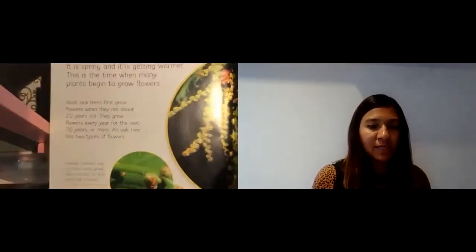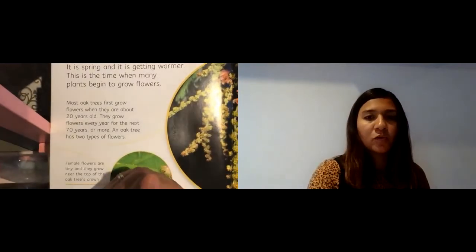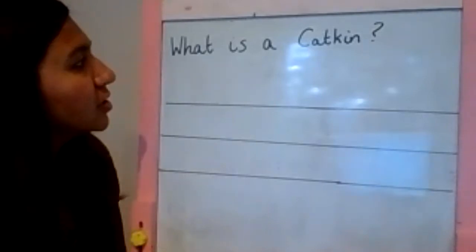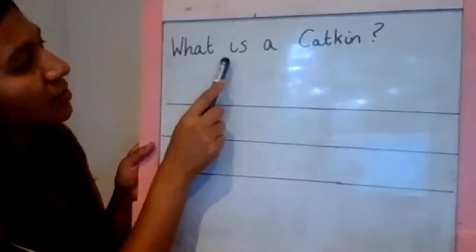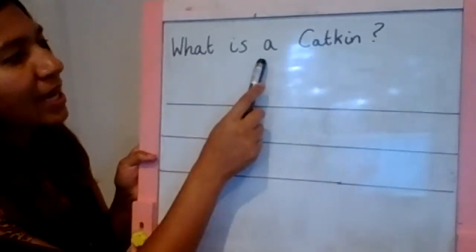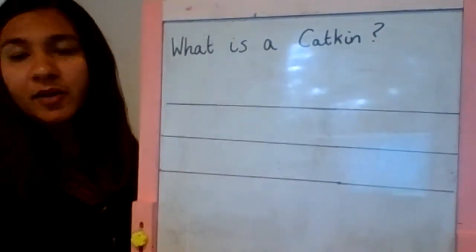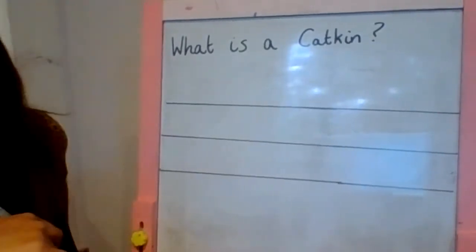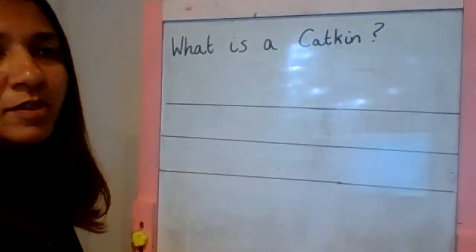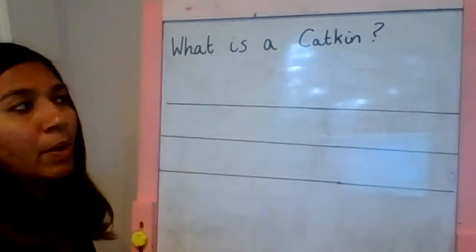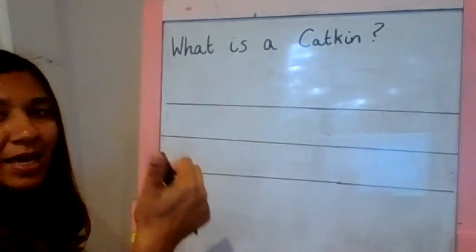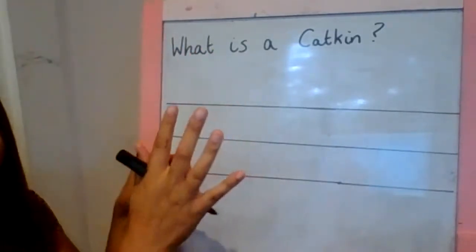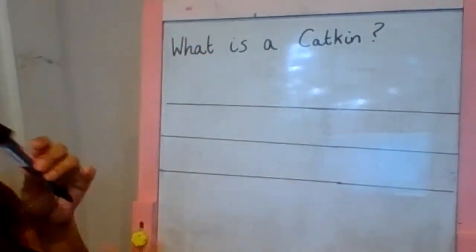So what I'm going to do is give you some questions again for you to answer, because you did such a good job yesterday. I've got one question on my board, so I'm going to show you how to answer it. What is a catkin? Can you remember what a catkin is? A catkin is the male part of the flower. So I'm going to write that in a sentence, and I'm going to remember to start with a capital letter.